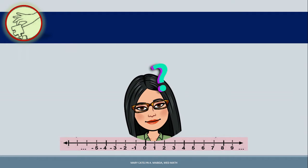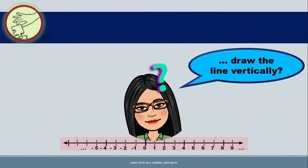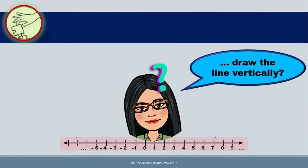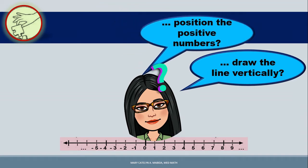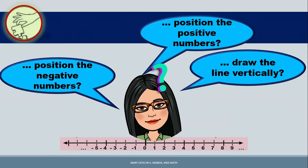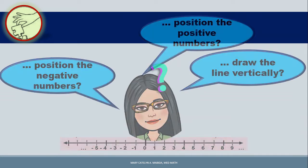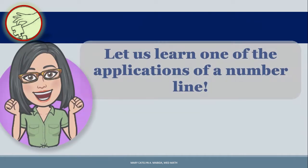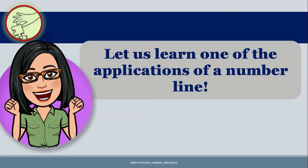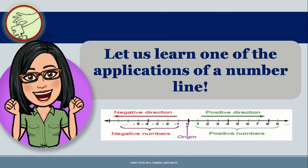Now, is it possible to draw a line vertically instead of horizontally? And where will you position the positive real numbers, and what about the negative real numbers? In this module, you will find out one of the applications of a number line.